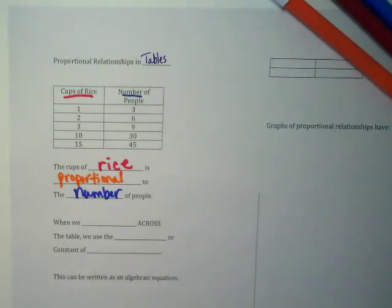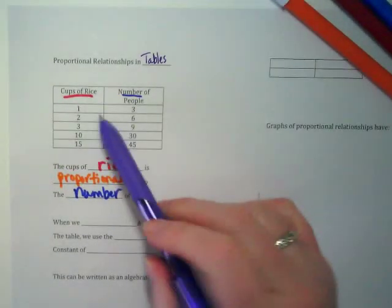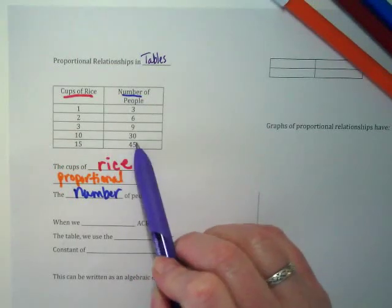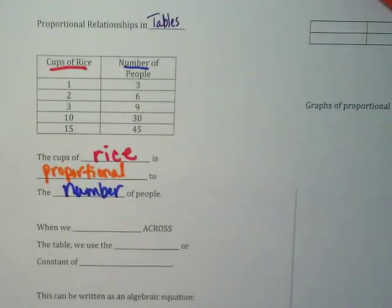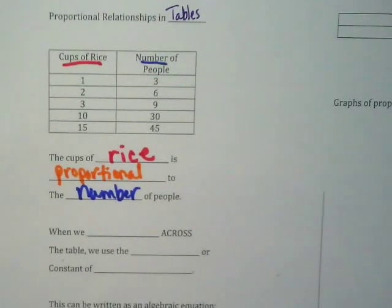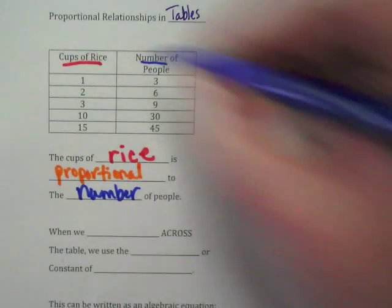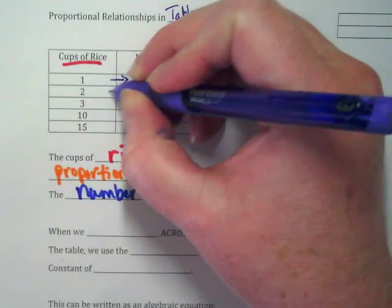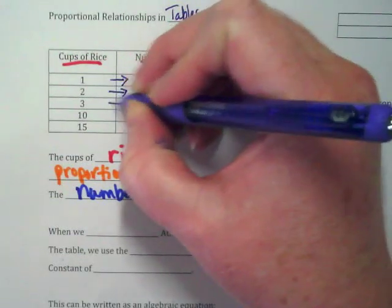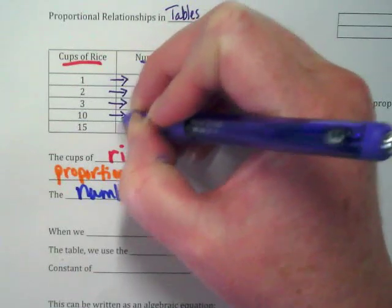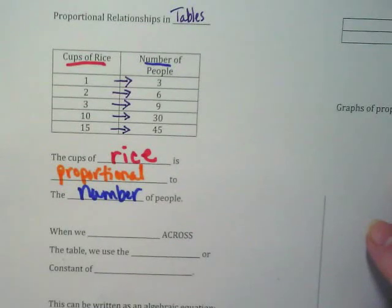I'd like you to look closely at that table. What is happening from the cups of rice to the number of people? What pattern do you see? What is happening between these numbers? And yes, with your pencil, you should be making these arrows. What's happening with those numbers? Jonathan? They are getting multiplied by three.